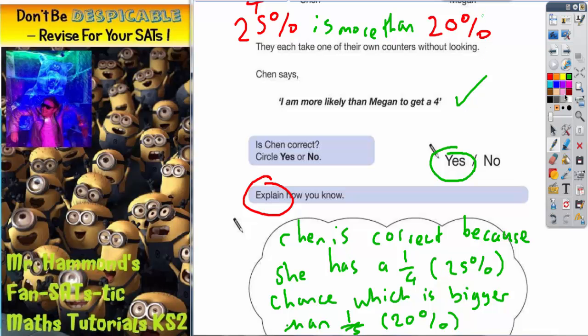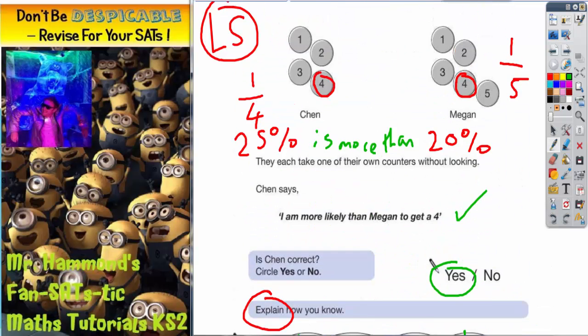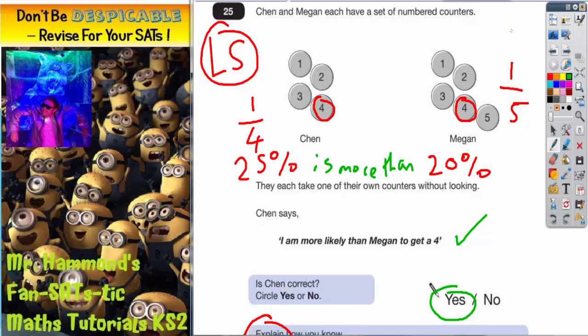And that's it. If you can manage to explain that, you'll get the level 5 mark on that question. And that's the last question on the paper. So, well done.